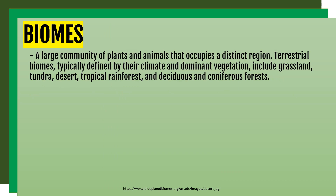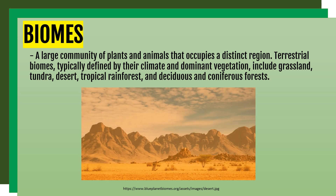Next is biomes. Biomes is a large community of plants and animals that occupies a distinct region. Terrestrial biomes, typically defined by their climate and dominant vegetation, include grasslands, tundra, desert, tropical rainforests, and deciduous and coniferous forests. Here is an example of a biome — a desert — which includes a large community of plants and animals occupying a distinct region.